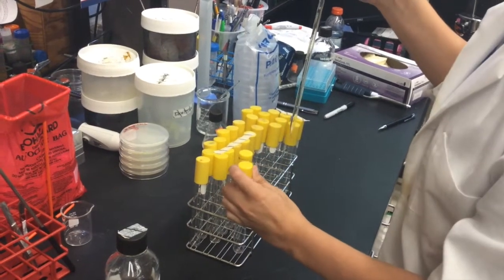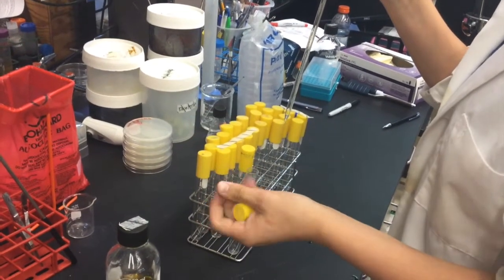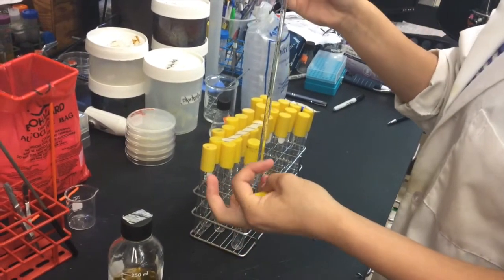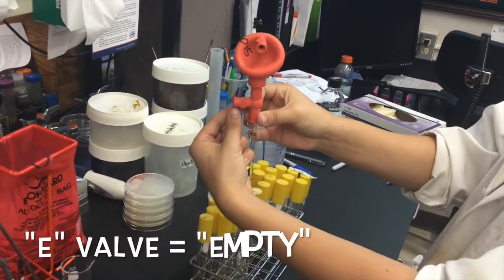Using your left hand again, remove the cap from the glass tube and do not set it down. Then transfer the fluid from the pipette into the tube, pressing the E valve.